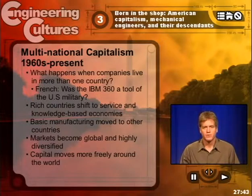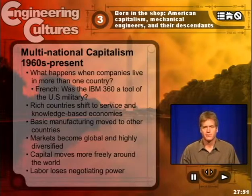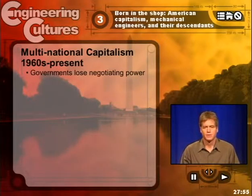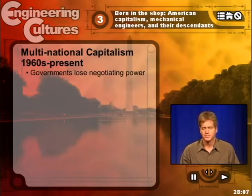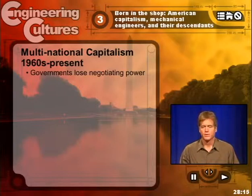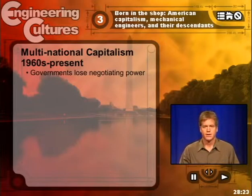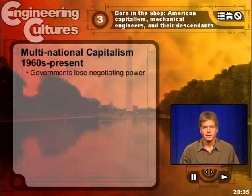The Fordist model erodes as labor loses negotiating power relative to companies that can move from one country to another, and governments lose negotiating power. Therefore, what constitutes a relationship between a government and a company has become ambiguous. It is no longer possible to assert unambiguously that what is good for General Motors may be good for the United States, because General Motors lives in lots of different countries. In a world of multinationals, with an overlay of multinational corporations that live both inside and outside of countries, what constitutes industrial development and what constitutes global organizations both become unclear.